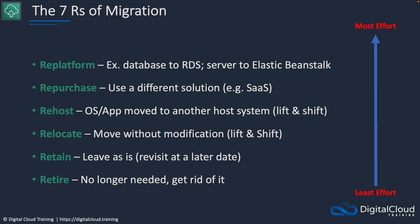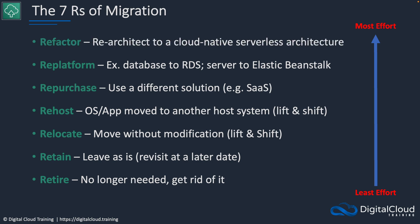The next R is re-platform. For example, you might move a database to RDS or a server onto Elastic Beanstalk — so it's not just moving a virtual machine into EC2, but going onto a new platform. With Beanstalk, you're separating the operating system and the code layer because it's a platform-as-a-service solution, and with a database you're moving from a self-managed database to a managed platform-as-a-service as well.